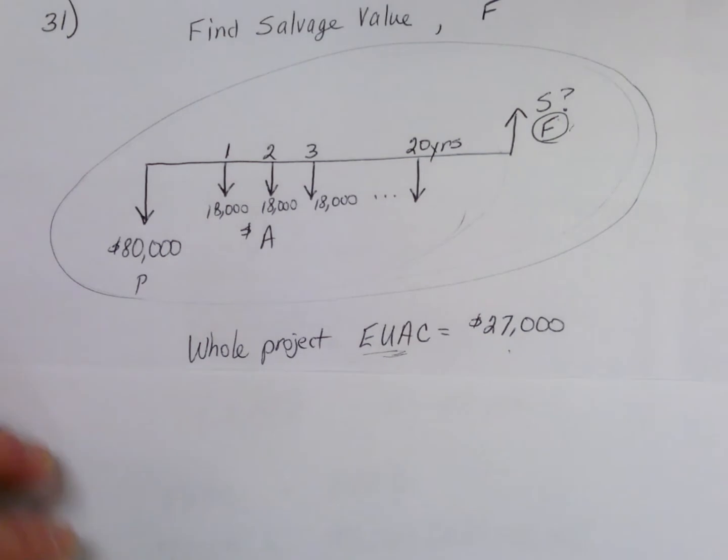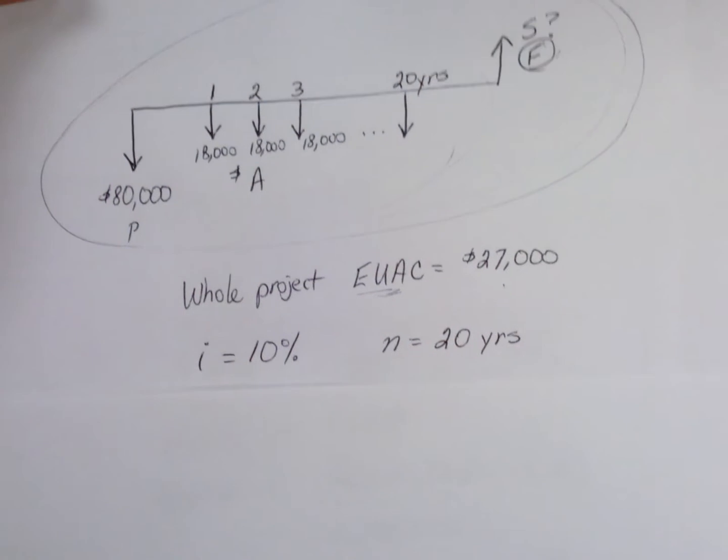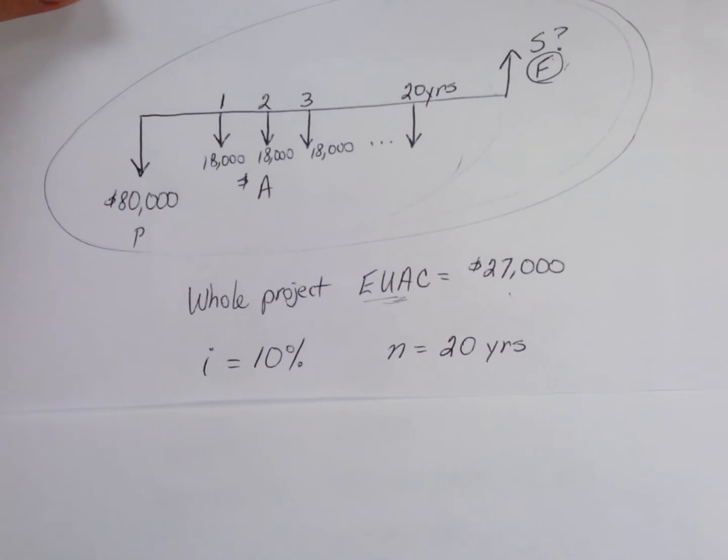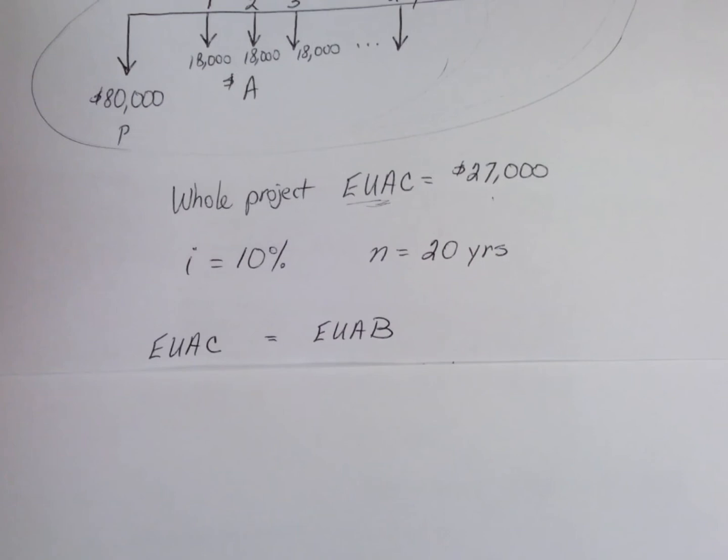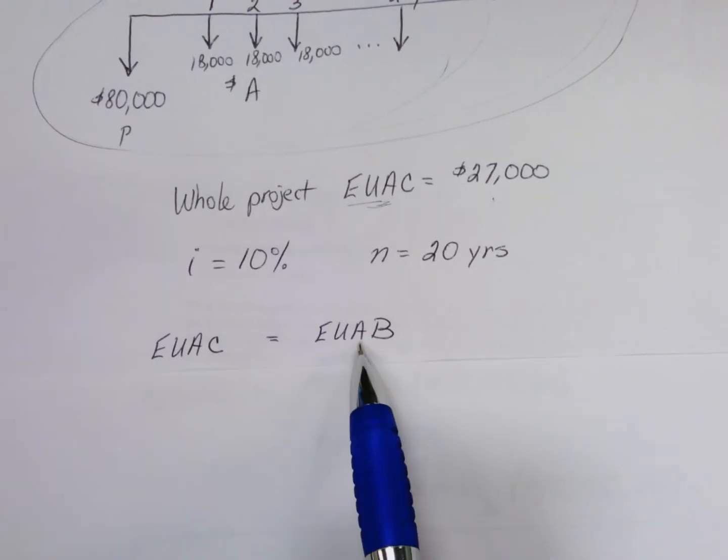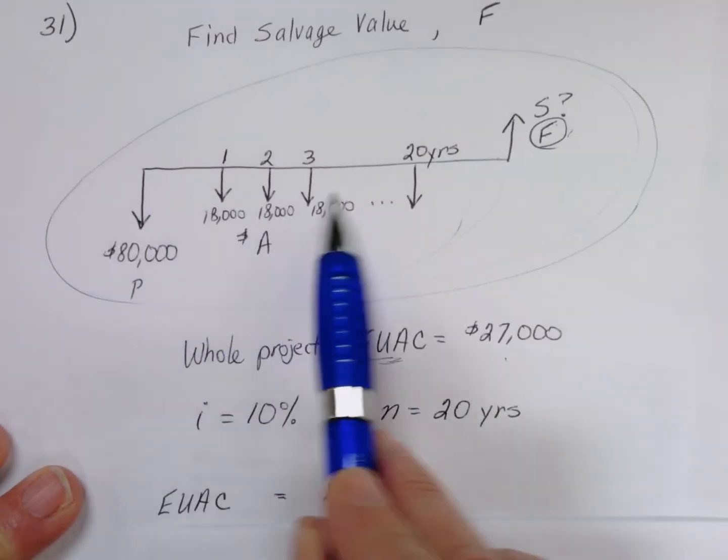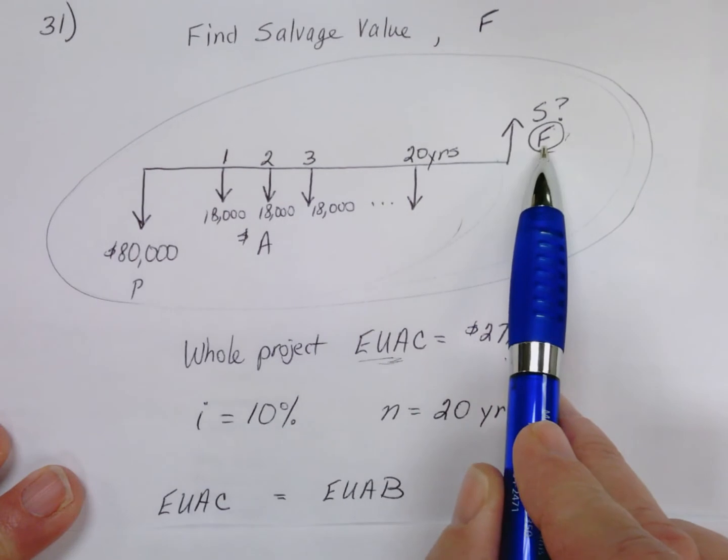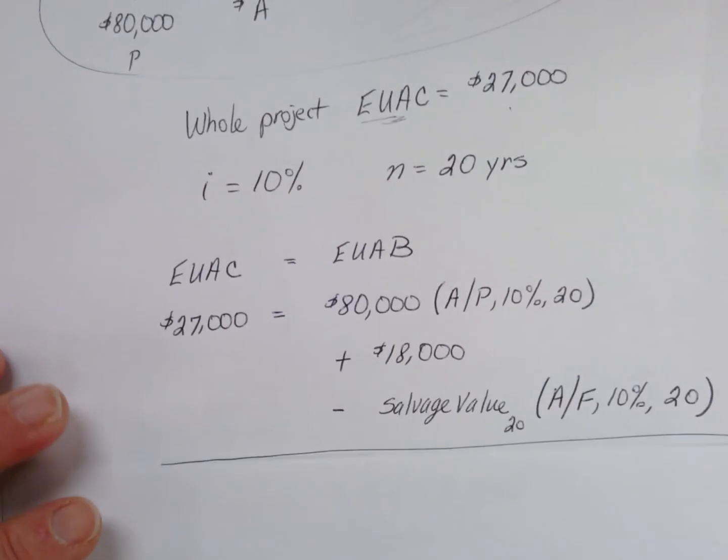So that's what we're asked to find and what we're given in this problem. I've written down also that the interest rate is 10% and that the project has a 20-year life. You can set this up as an equal uniform annual cost has to be equal to equal uniform annual benefits.